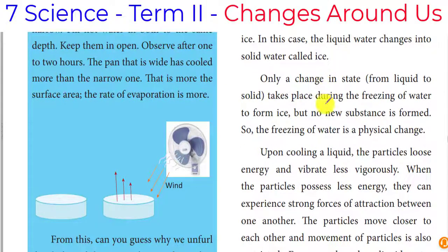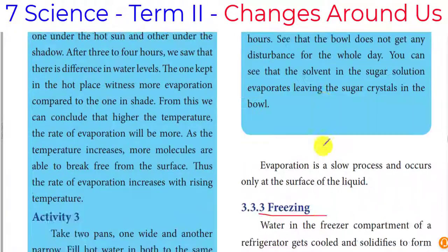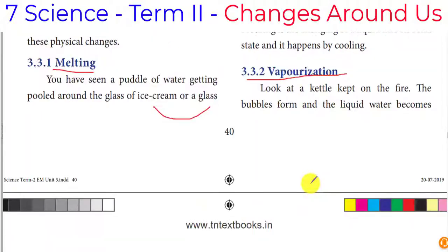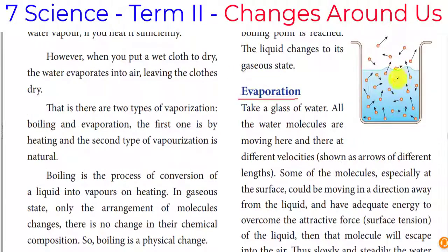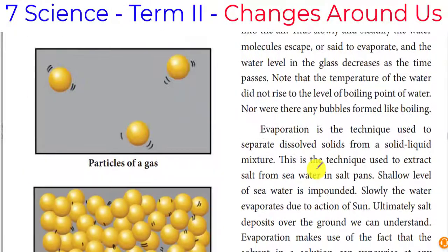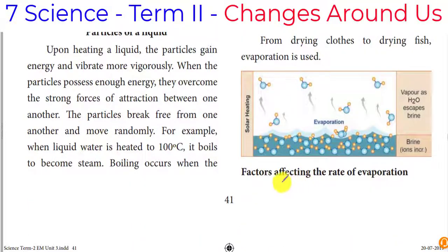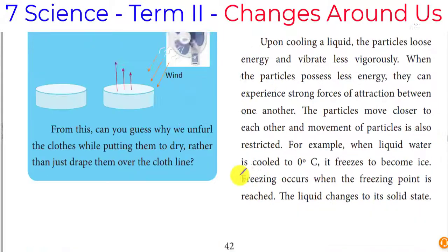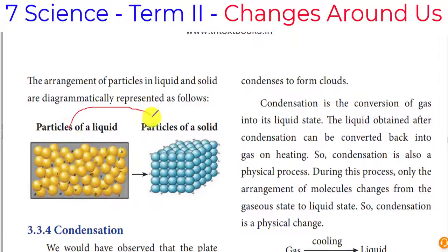Solid state converts into liquid state — that is melting. For example, ice melts into water. Evaporation occurs either naturally or artificially, as in oceans. Freezing: water is converted into ice by reducing the temperature. So liquid is converted into solid by means of freezing.